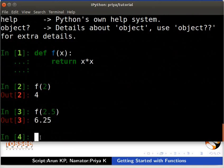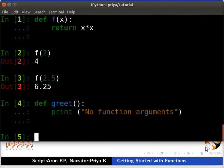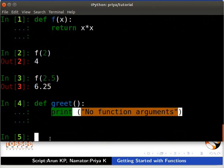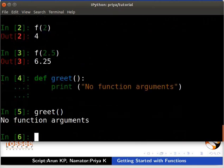Now, let us see how to write functions without arguments. Type the code as shown. It defines a new function named greet which will print no function arguments. Now, we will call the function as greet open and close parenthesis. Note that it is not mandatory for a function to return values. The function greet neither takes any arguments nor returns any values.